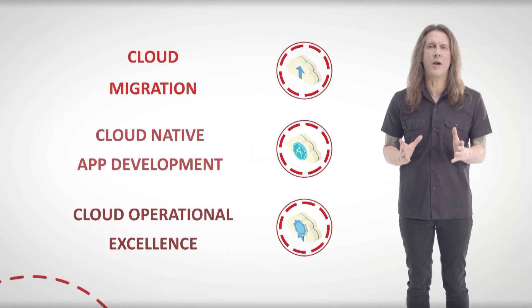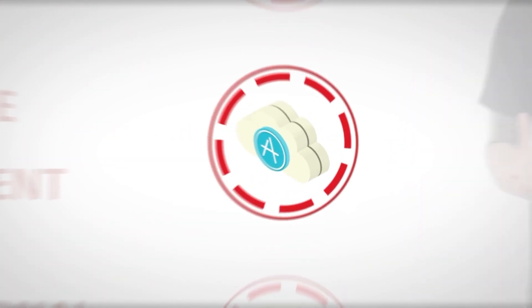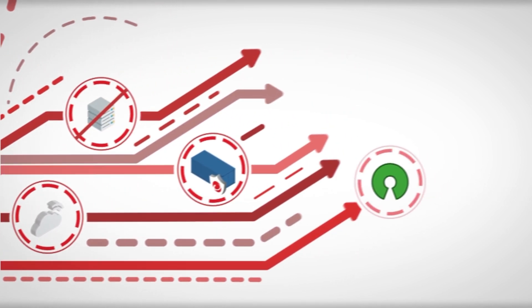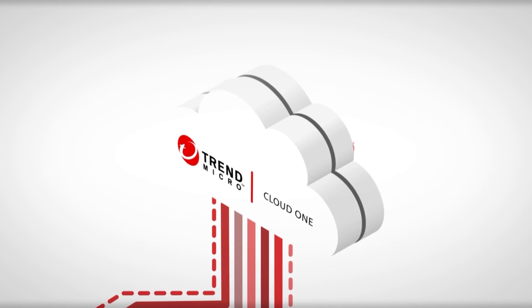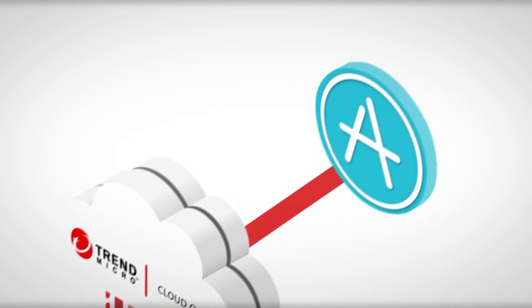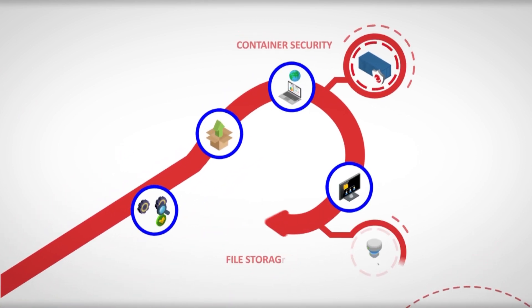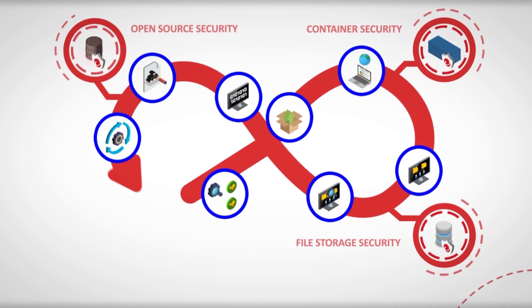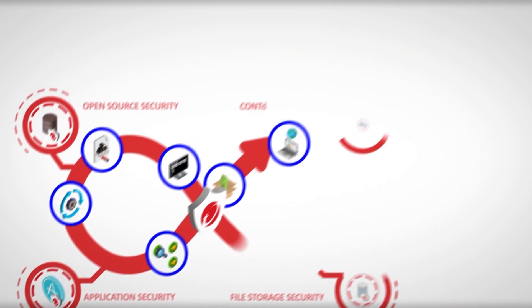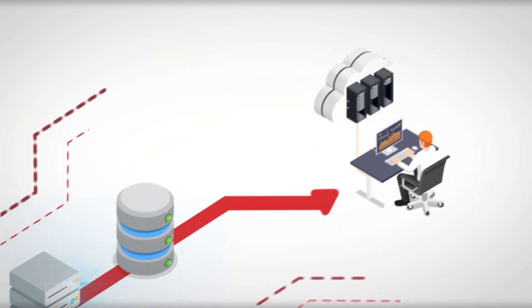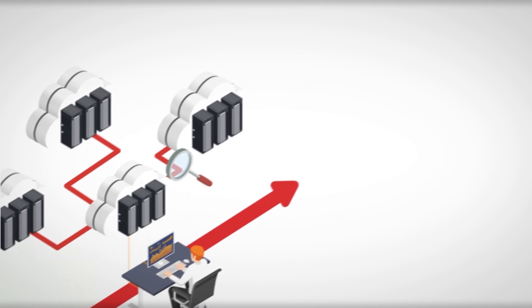Trend Micro designed Cloud One with three core priorities in mind. Let's talk about cloud native application development. Working hard to deliver fast and iterate often means developers leverage code in new ways and from different sources like open source or public repositories. Trend Micro Cloud One is optimized for cloud native applications with seamless integration into a DevOps pipeline, continuously scanning container images, verifying policy-based admission controls, and providing container runtime protection. Cloud One scans file storage buckets and blobs and provides visibility and monitoring of open source libraries to help SecOps prioritize risk.